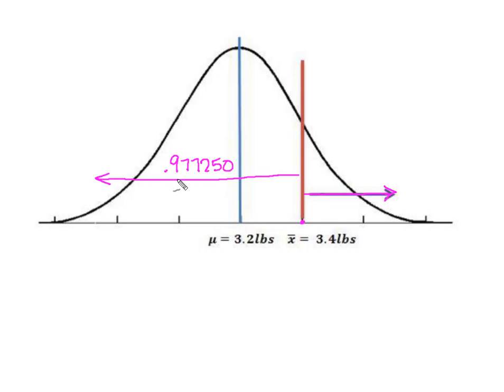Since we know that the area under a normal curve is equal to 1, we can simply take 1 minus the 0.977 and we find that this area here is 0.02275.